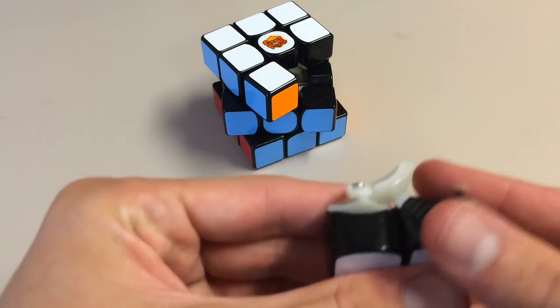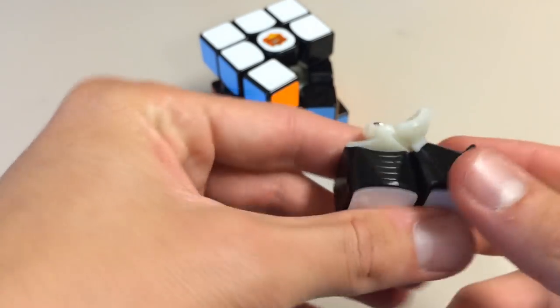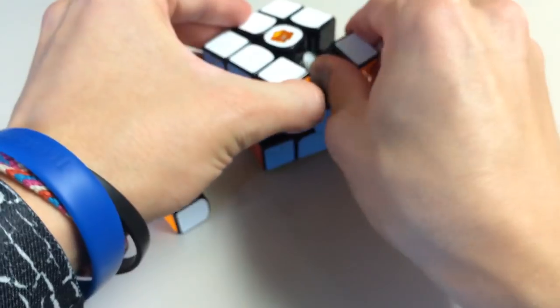Also, one thing I forgot to mention is that the corners and edges that fit together like this, and they do both have ridges on it just like the 57mm, which I think is what gives it its smooth feel.